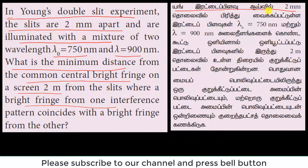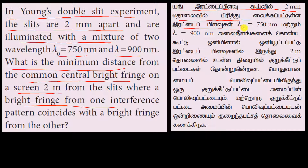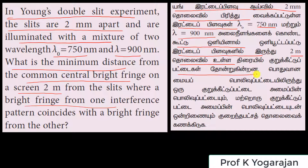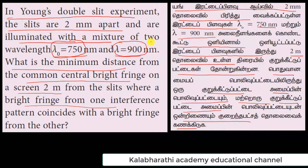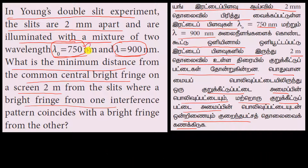In Young's double slit: slit separation d is 2 mm, lambda one is 750 nm, lambda two is 900 nm. We have two sets of fringe patterns. We need to find the distance at which a bright fringe from one pattern coincides with a bright fringe from the other pattern.